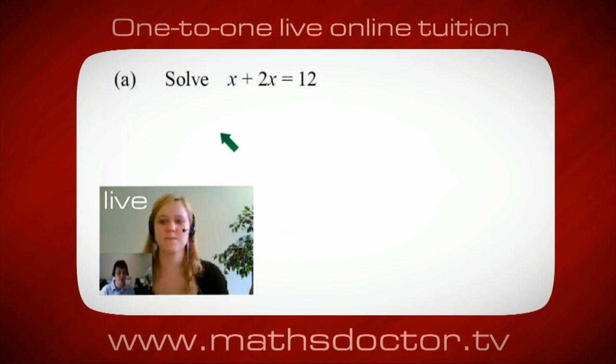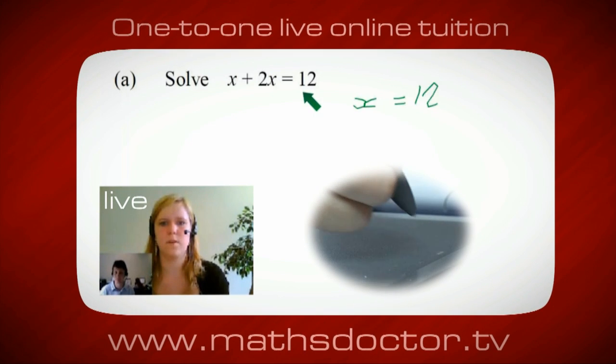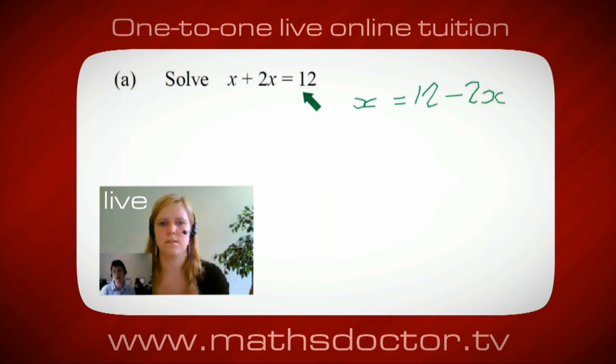Okay, Marie, so let's have a look at this one. So solve x plus 2x equals 12. So what do you think you do first? Okay, well, I want x on its own. So I would put x equals 12 minus 2x.